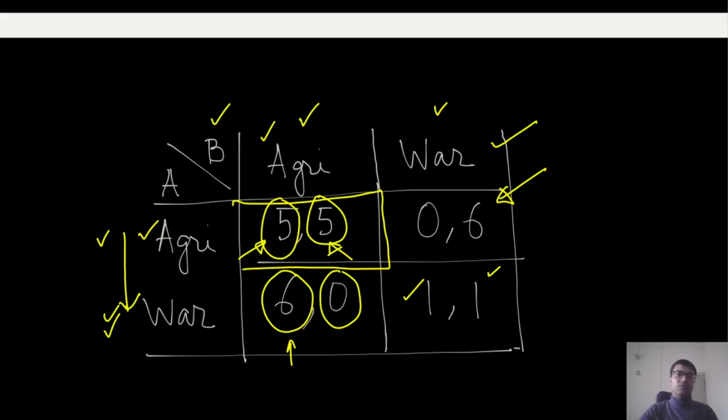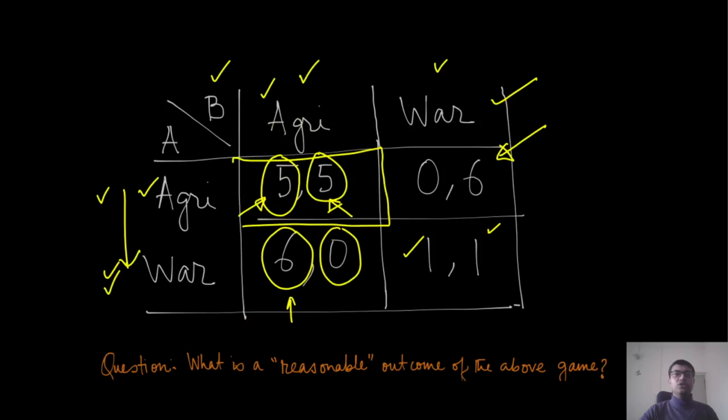If we ask what is a more reasonable outcome or action to choose for each of these players, given that they cannot communicate with each other—typically in such diplomacy you cannot communicate and take a collective decision because there is always a reason for one of the players to not follow that contract. You can see that if we look at this game matrix, from the point of view of player A, suppose player B is picking the action of agriculture. It is clear that player A should pick war because that is giving him a higher payoff than what he was getting with agriculture.